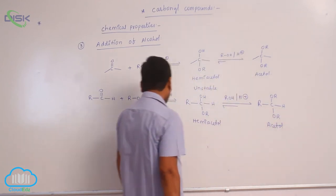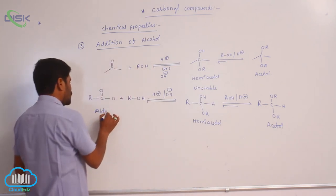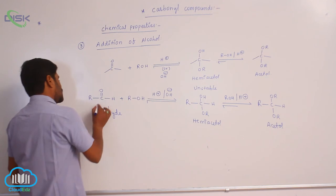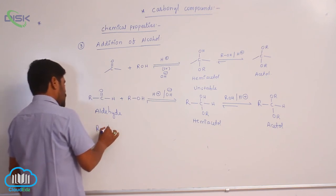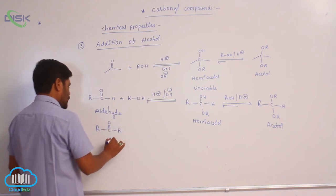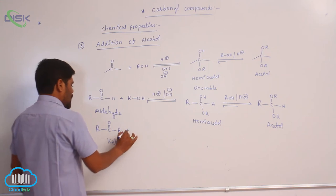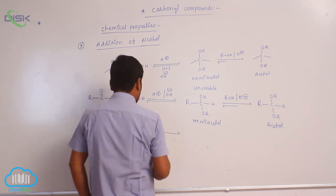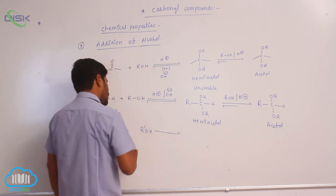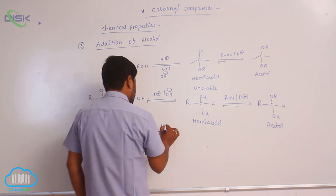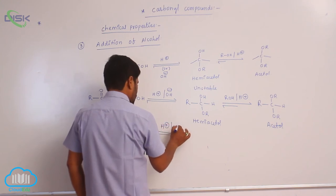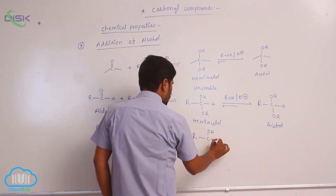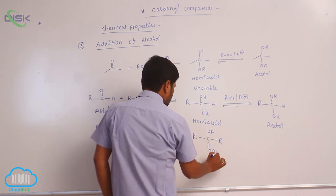This hemiacetal again reacts with an alcohol in the presence of acid medium to form a product — with loss of water — which is known as an acetal. Instead of an aldehyde, if you are taking a ketone — a C double bond O with two R groups — when the ketone reacts with two moles of an alcohol, starting with one mole of alcohol first in the presence of acid or basic medium.